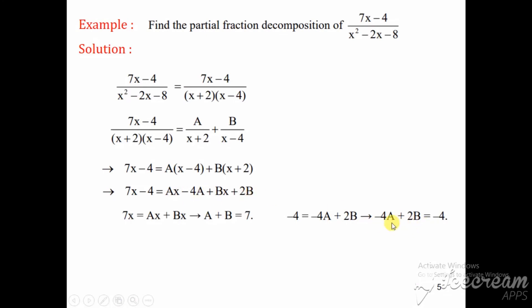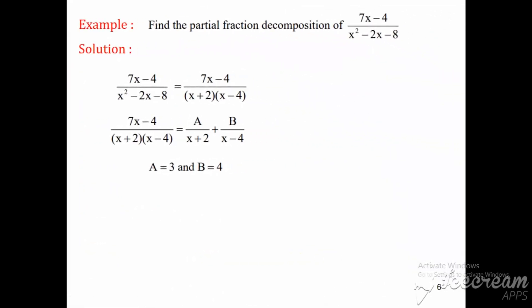We now have two equations in a and b, which we can solve simultaneously. You can use a calculator for this as well. We find that a = 3 and b = 4 satisfies both equations. Substituting these values back, we can write (7x - 4) / [(x + 2)(x - 4)] = 3/(x + 2) + 4/(x - 4). In this way, one can use partial fraction decomposition to write any fraction as a sum of simpler fractions.